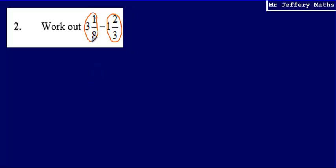So to turn this into an improper fraction, all I need to do is take the denominator, which is 8, multiply it by the whole number and then add the numerator.